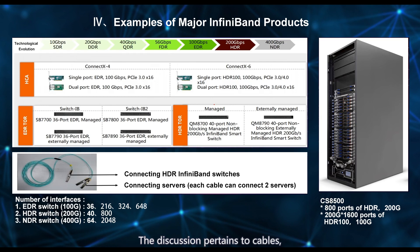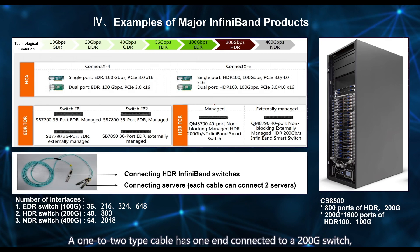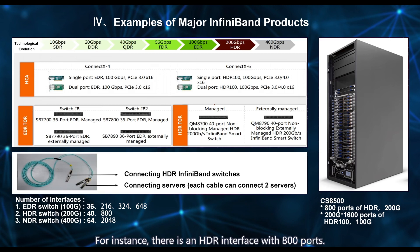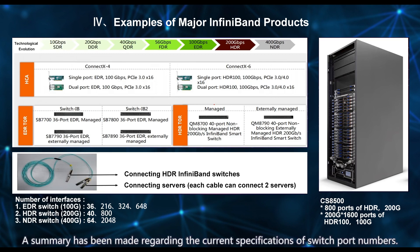Regarding cables, there are 1-to-1 and 1-to-2 types. A 1-to-2 type cable has one end connected to a 200G switch, while the other end can split into two 100G connections, which can be linked to two 100G network cards on a server. For instance, there is an HDR interface with 800 ports. It can support 800 200G connections or 1,600 100G connections, but this requires the use of a special cable for conversion.